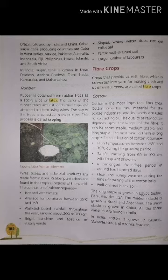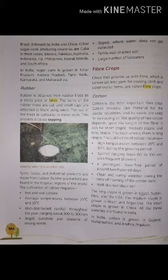Cotton is the most important fiber crop. It provides raw material for the textile industries, and its seeds are used for extracting oil. The quality of raw cotton depends upon the length of the fiber — the longer the cotton, the better the cloth. There are three types: long staple, medium staple and short staple. The best among them is long staple.